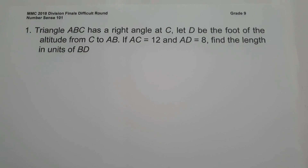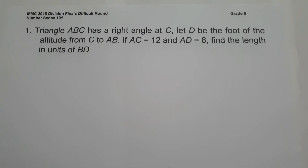On number 1: triangle ABC has a right angle at C. Let D be the foot of the altitude from C to AB. If AC equals 12 and AD equals 8, find the length in units of BD.